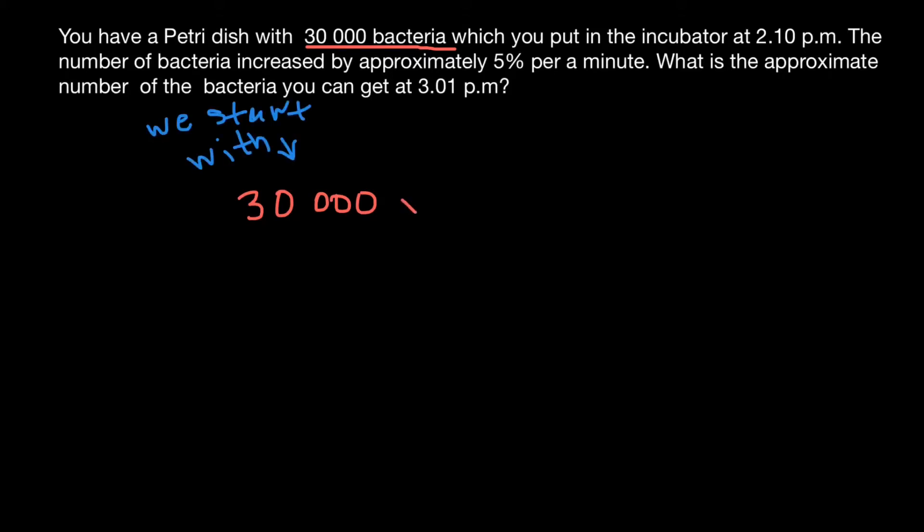Then we have to multiply by one plus zero, zero, five. And this number represents 5%. This is the rate by which the bacterial colony increases each minute. So 5% on the scale between zero and one is going to be 0.05. And the rate is 5% per minute.